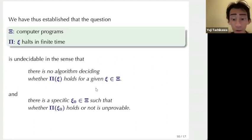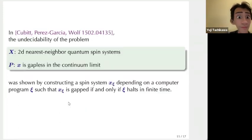In this way, we have established that this particular question, so the class of systems is computer programs, and you ask whether a given program ξ halts in finite time. So this is undecidable in the sense that there is no algorithm deciding whether a given program halts in finite time. And then there is also a specific program ξ_0, such that whether ξ_0 halts or not is unprovable. So that specific program just lists all possible text files and checks whether they are a proof of contradiction in mathematics.